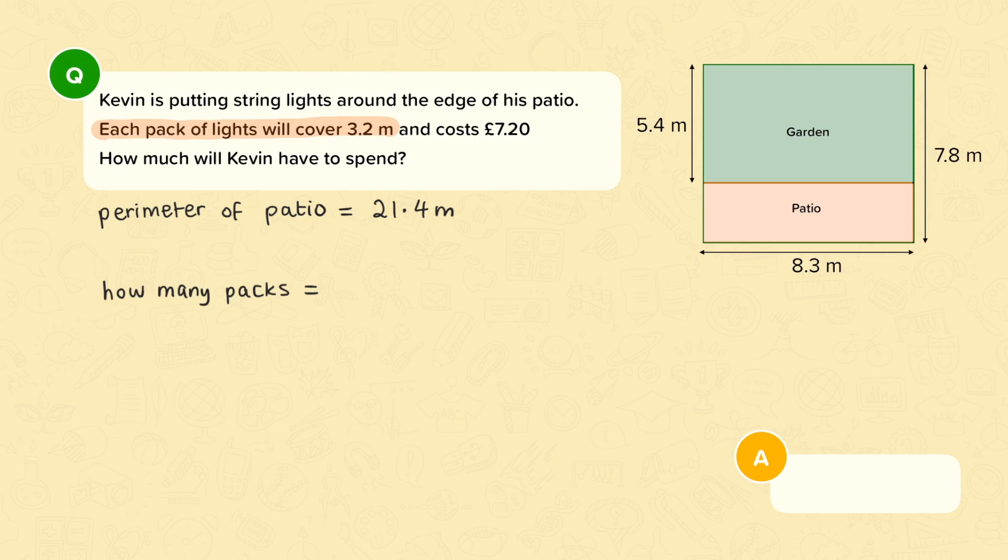So let's check. The calculation you should have done is 21.4 divided by 3.2 which is 6.6875. That means that Kevin will need 7 packs.